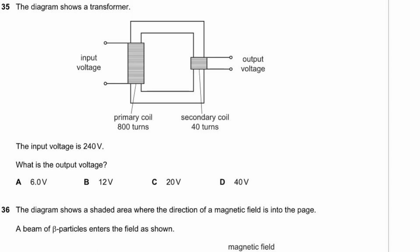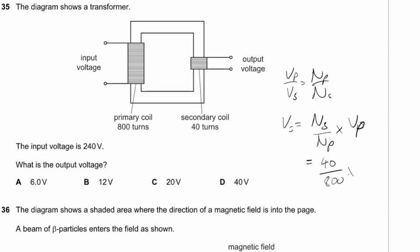Question 35. A transformer has an input voltage of 240 V. Using Vs = (Ns/Np) × Vp = (40/800) × 240 = 12 V. Answer B.